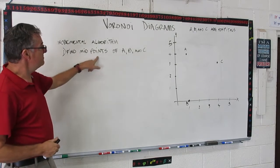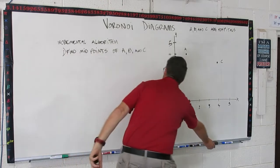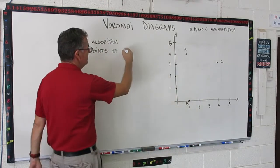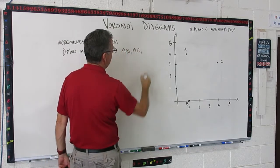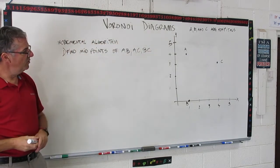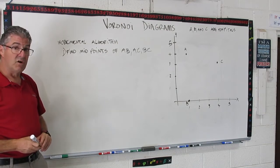Okay, step one, find the midpoints of all the segments of AB, AC, and BC. So now you have your points there. You know what they are. You can read them right off the graph. Go ahead and pause the video and find all those midpoints.